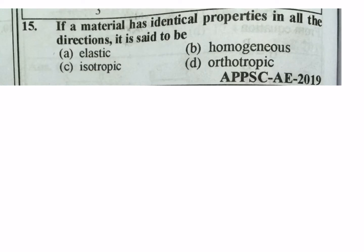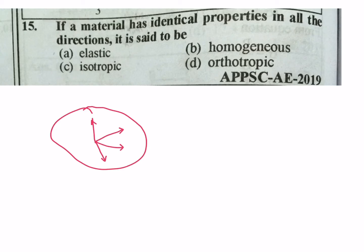Next question: If a material has identical properties in all directions, it is called an isotropic material. So the answer is C.